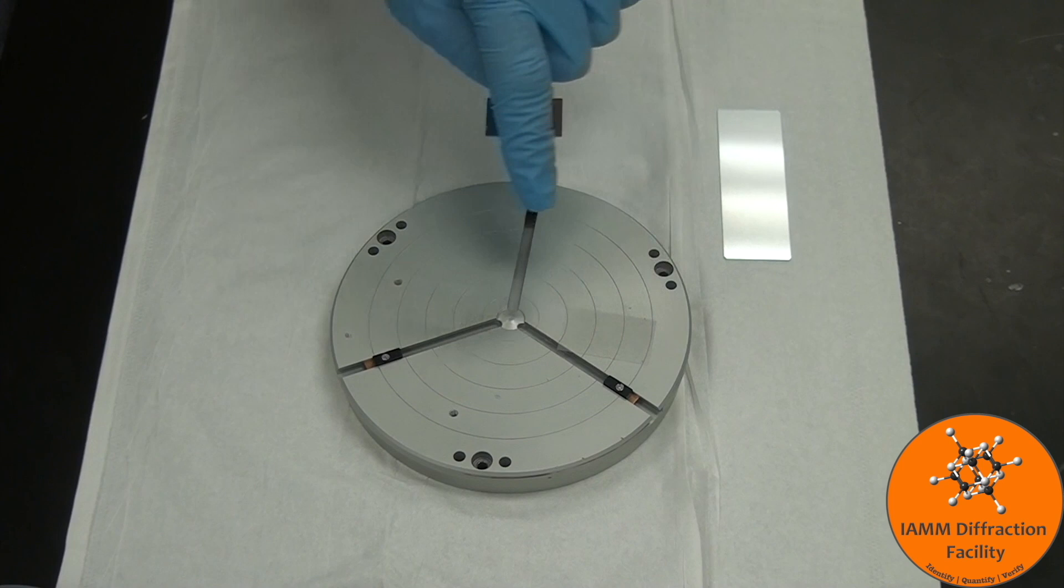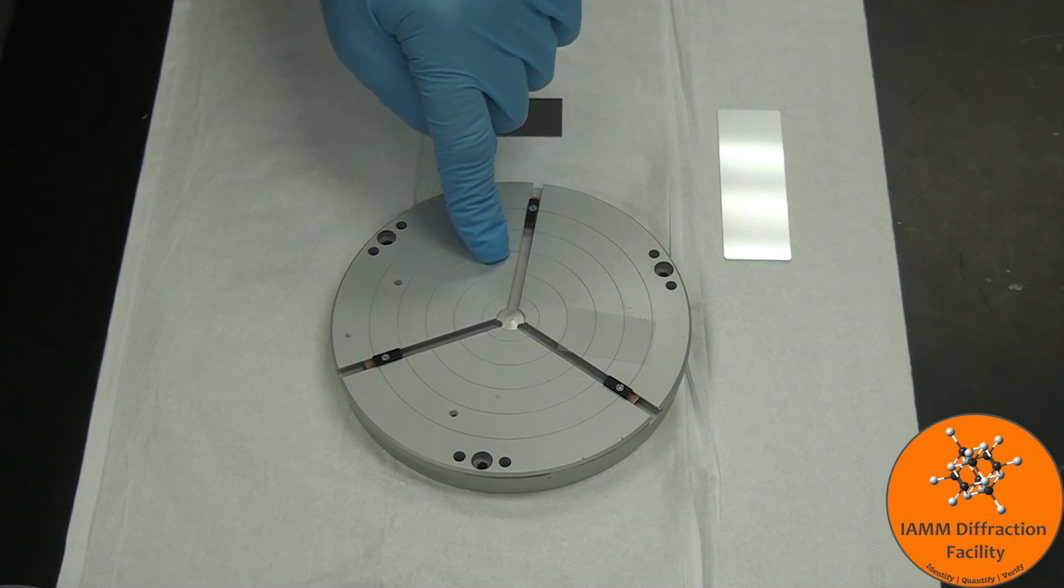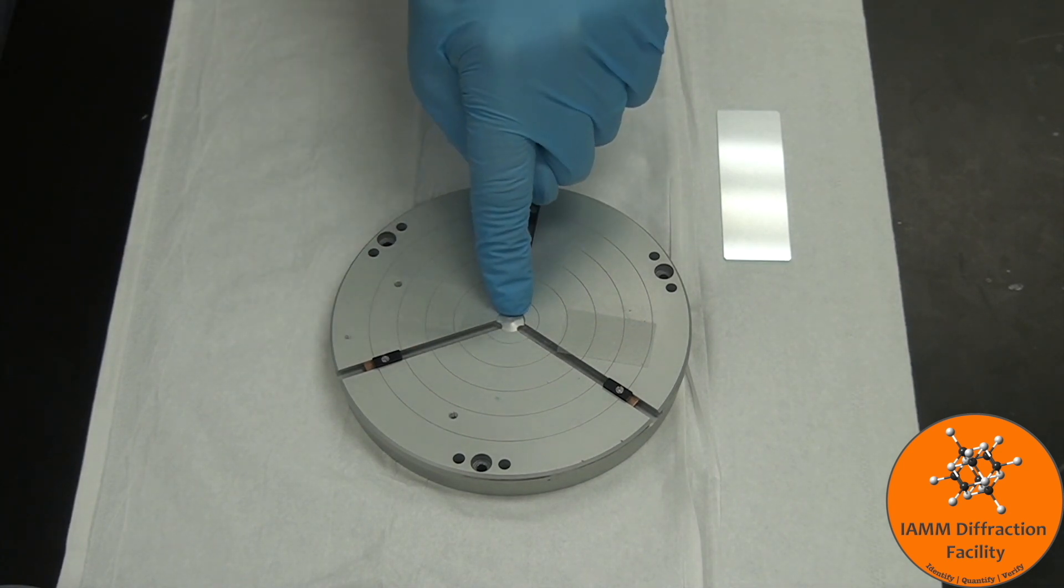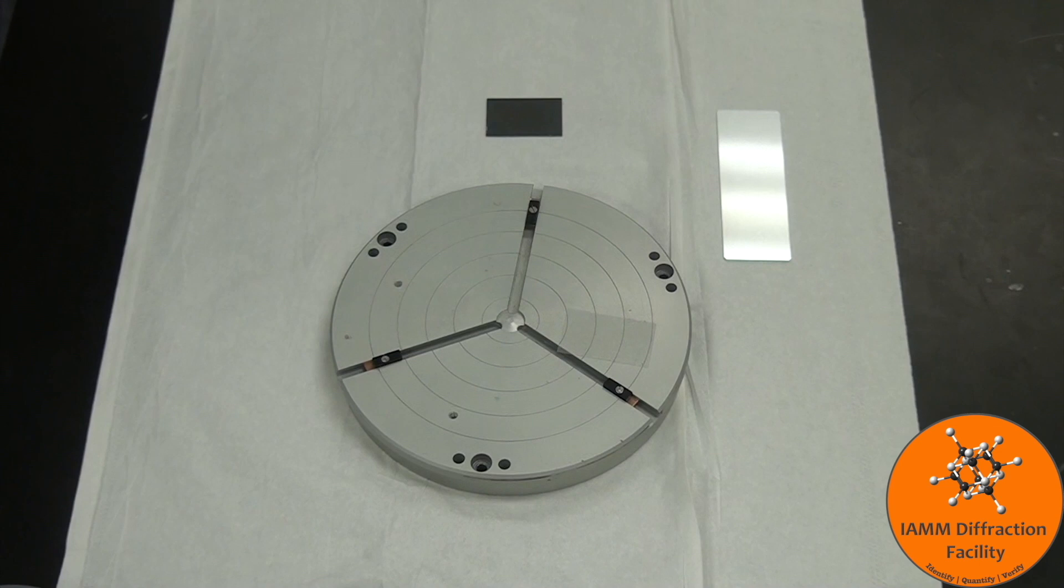You would then put the slide on this piece here, which will be in the chamber, and all we really have to do is make sure that the sample is lined up with the center portion here, and then we know that the sample is lined up with the center of the x-ray beam in the chamber.